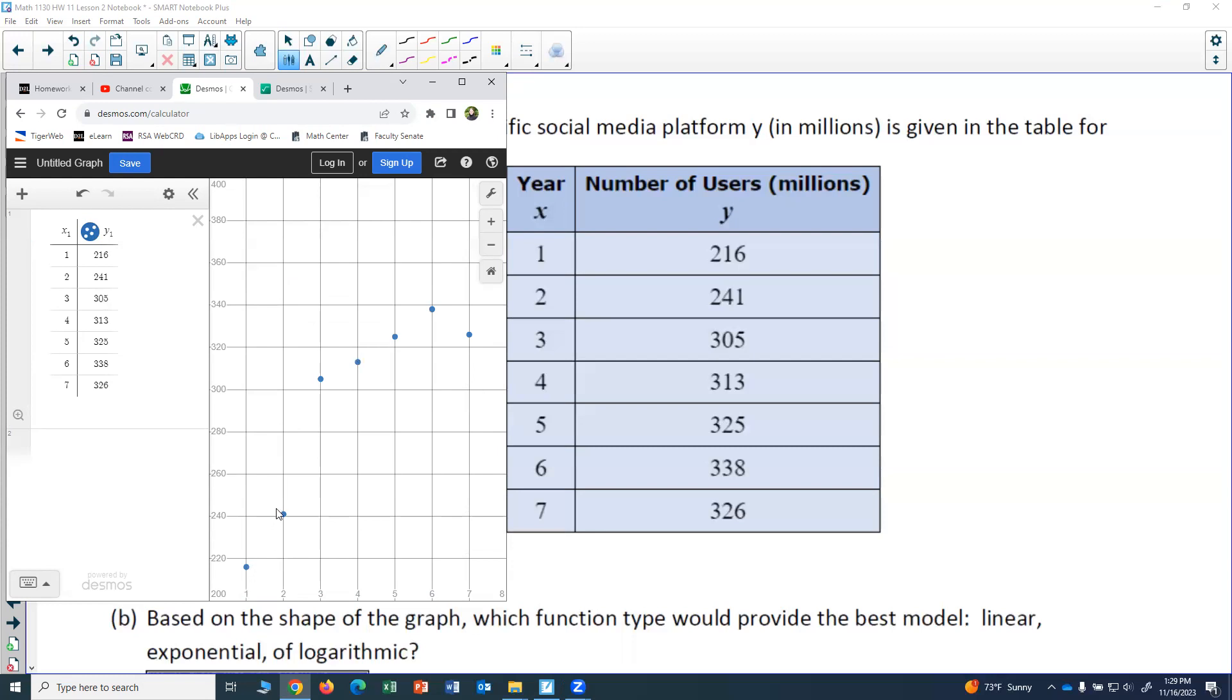So it's going up and then kind of curving over. The options I'm being given are based on this graph. Would linear, exponential, or logarithmic be the best option? Exponential would not be.